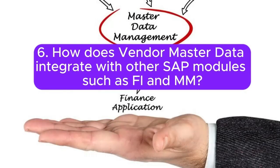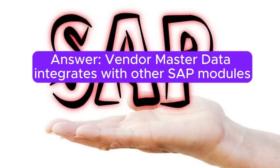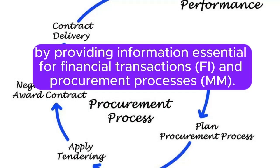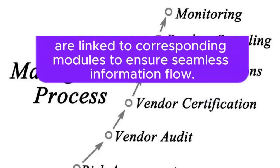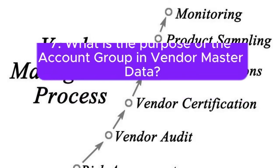6. How does Vendor Master Data integrate with other SAP modules, such as FI and MM? Answer: Vendor Master Data integrates with other SAP modules by providing information essential for financial transactions (FI) and procurement processes (MM). The views in Vendor Master Data are linked to corresponding modules to ensure seamless information flow.